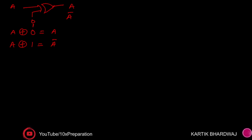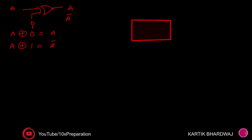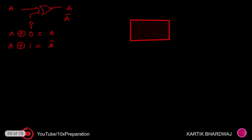Now, coming back to the binary adder. In the binary adder, you put inputs — suppose a three-bit input — at the two inputs, and it provides the sum of those two inputs along with a carry. If there is another input C and you set it equal to zero, it performs addition. This is the four-bit binary adder.